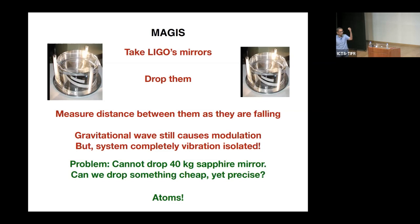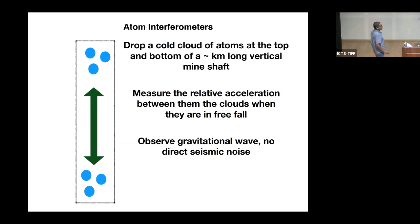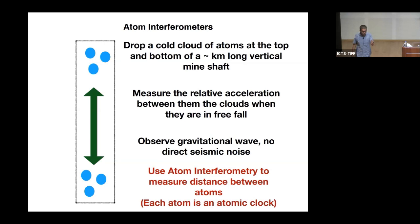So the question becomes, instead of dropping the mirrors of LIGO, is it possible for us to drop something cheap yet something very precise? And the answer is you can. You can drop atoms, cold atoms, or atomic clocks, because that's what an atomic clock is. It's just clocks, atoms falling down. So let me rapidly tell you what the idea of this MAGIS experiment actually is. This is the rough idea of what we want to do. Let's say you take, go to one of these mines in the world, and you go and find one of these kilometer long vertical mine shafts that are there. What you're going to do is you're going to go to the top and the bottom of this mine shaft, and you will drop a bunch of ultra-cold atoms from the top and the bottom. So they're now in free fall.